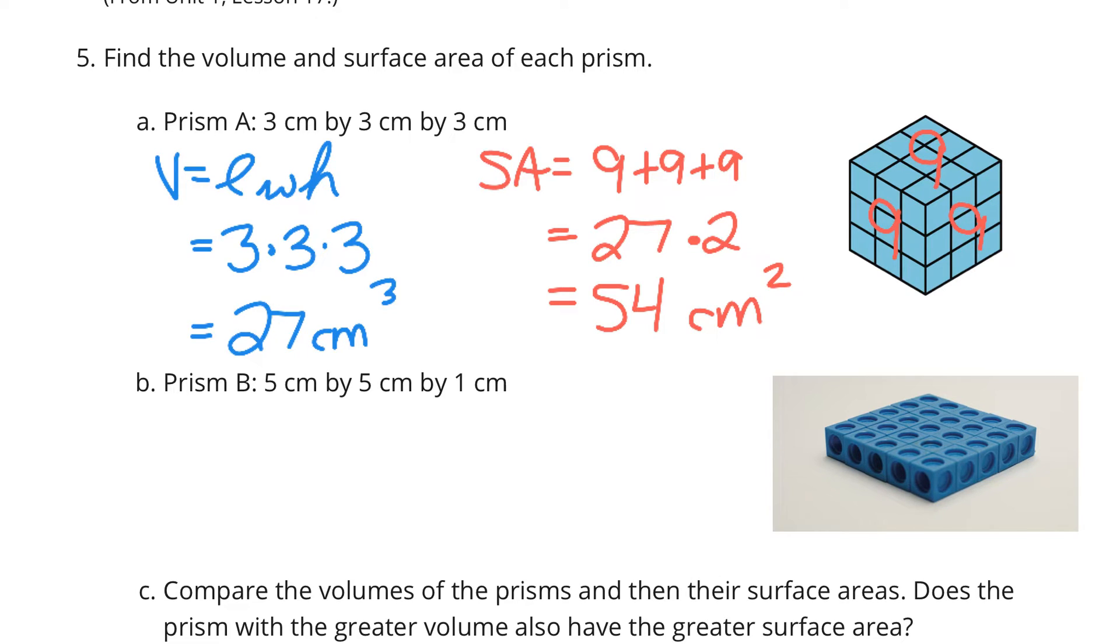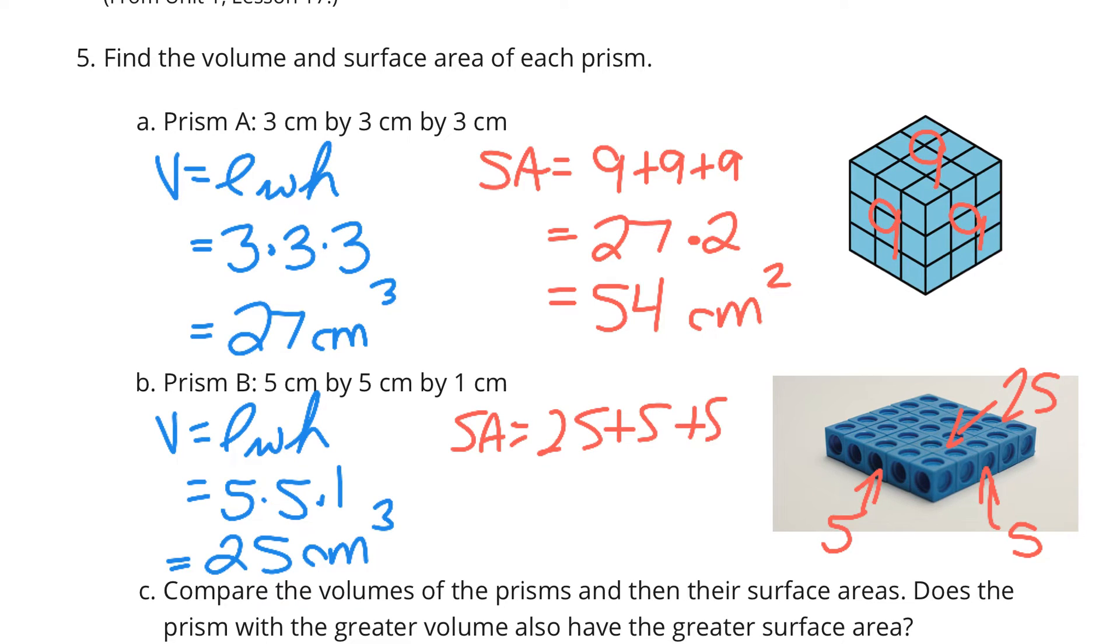What about B? A 5 by 5 by 1. Well, if volume is equal to length, times width, times height, once again, 5 times 5, times 1, is going to be 25 cubic centimeters. Now, surface area, I see this side has 5, this side has 5, this side has 25. And so, for surface area, if I add up the 25, the 5, and the 5, I get 35. But again, that's only half of what we have. So, if I multiply by 2, I get 70 square centimeters.